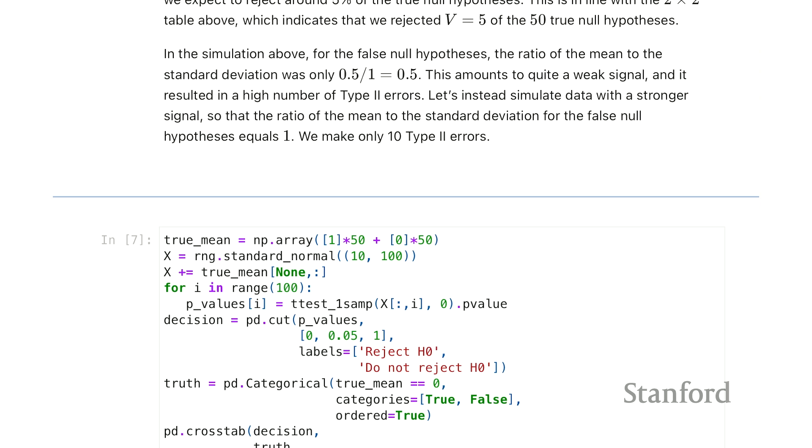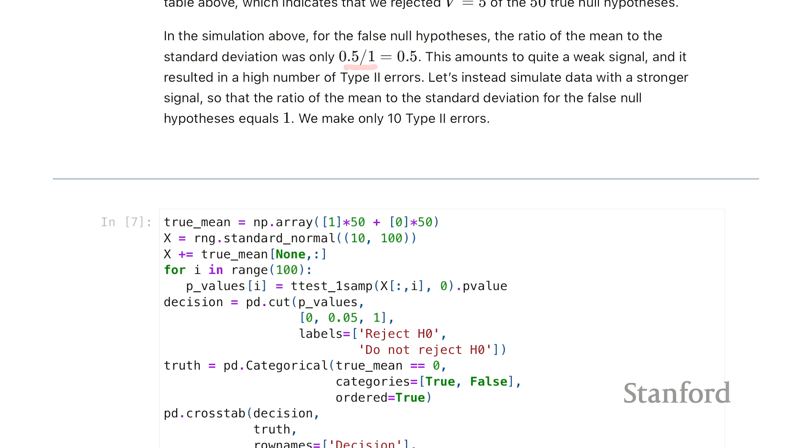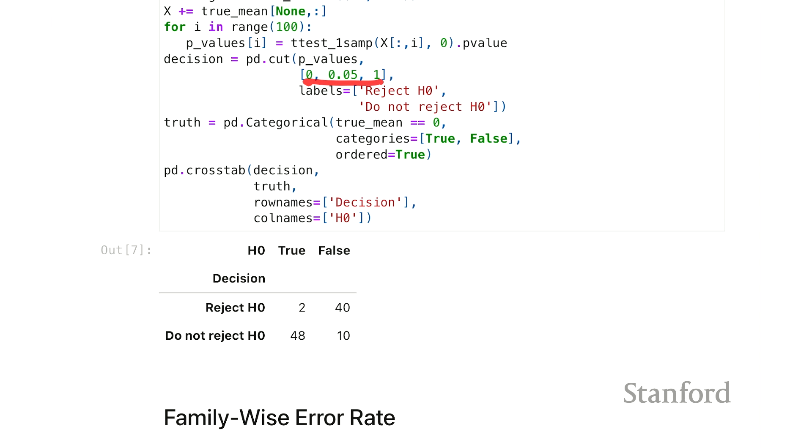We're going to repeat the experiment but with a slightly higher signal. So instead of having a 0.5 in the first 50 columns, we're going to have a 1. And so as we increase the signal strength, we'd expect we would have more discoveries, but hopefully not too many more false discoveries. And now we see we only have 2 out of 48 false positives. The other flip side of a false positive is a false negative. And that would be a case where there really is a signal, that is the null hypothesis is false, but we fail to reject.